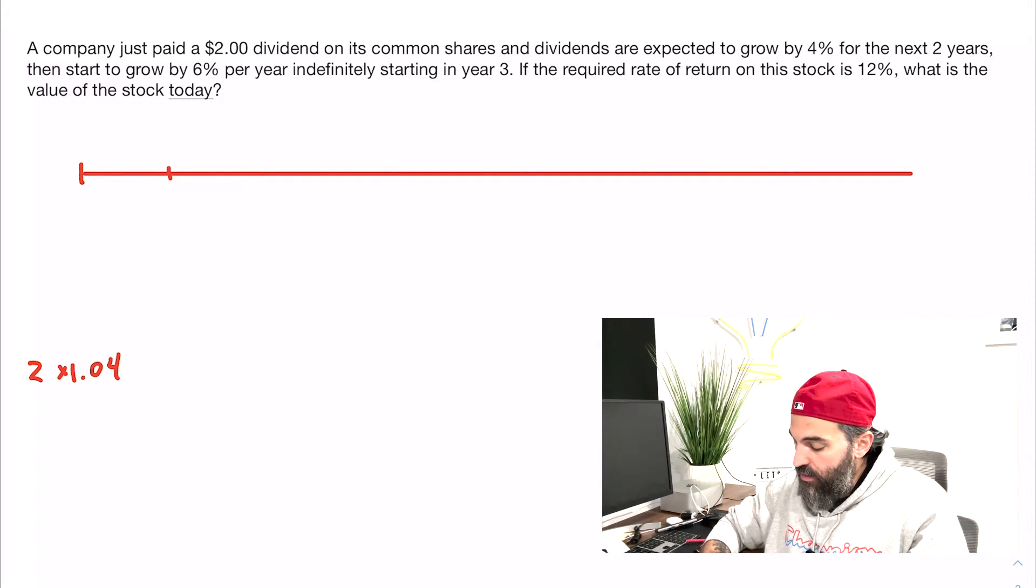If you like formulas, the formula I used is D1 equals D0 times one plus g. So that would be $2.08.